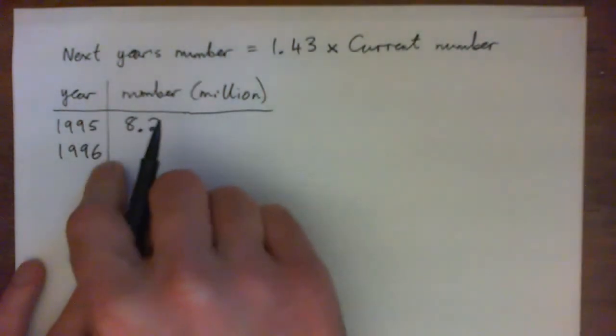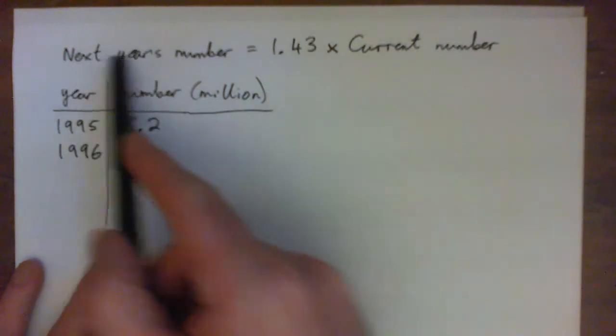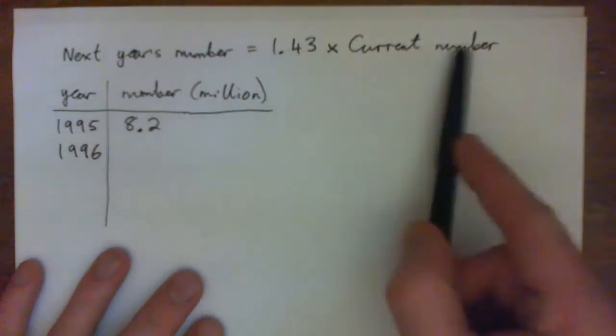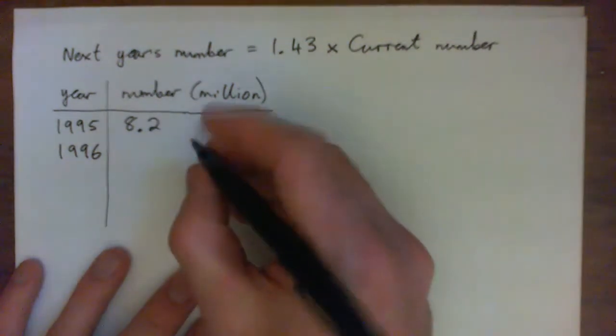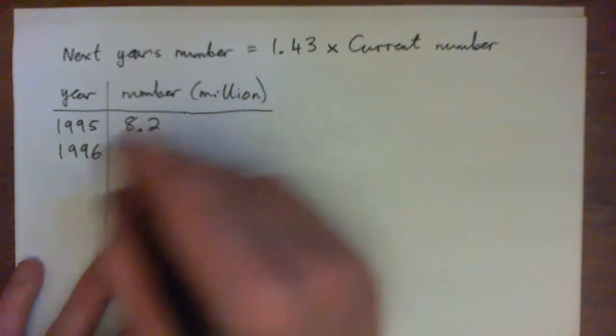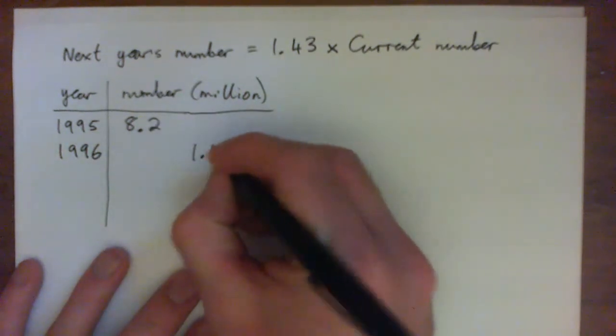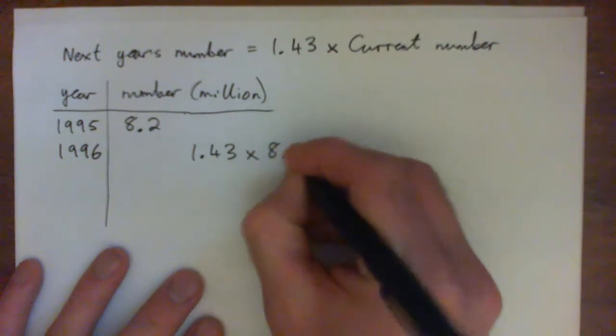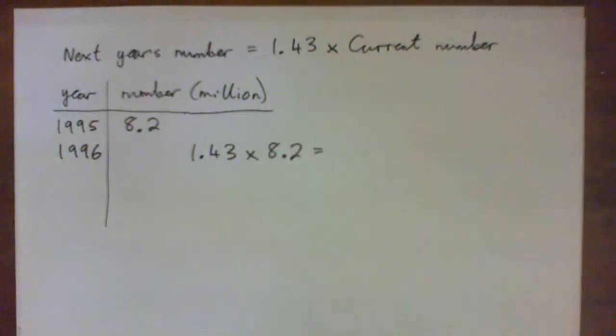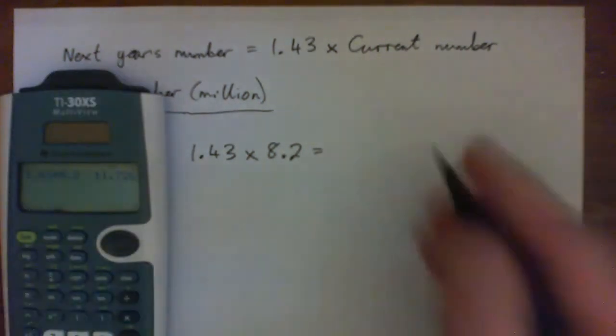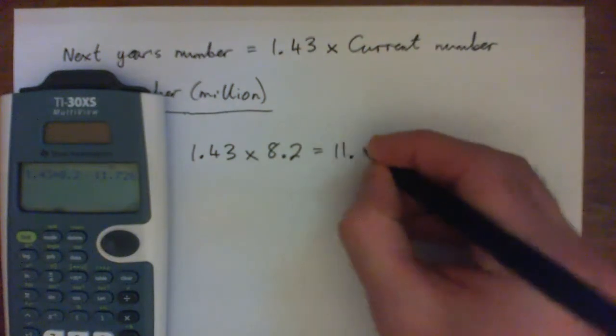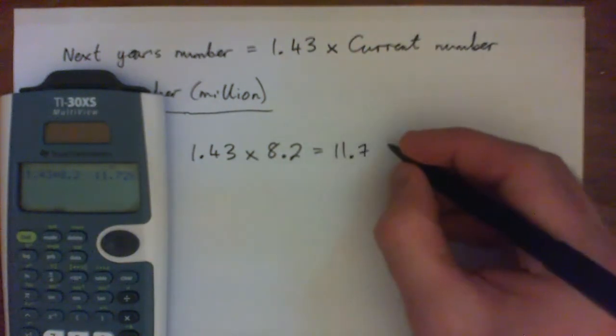Okay, I hope you pressed pause on the video and tried it. I'm going to do it with you now. So 1996, that's the next year, and we have this little formula here. It says next year's number equals 1.43 times the current number, right? So we go next year's number 1996 is 1.43 times the current number, which is 8.2. Plug that in the calculator, and what do you get?